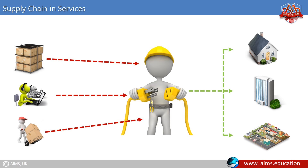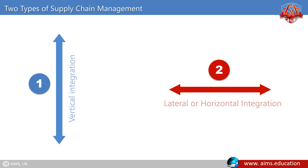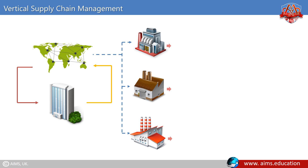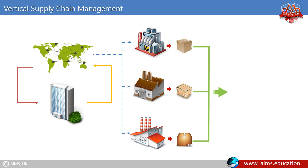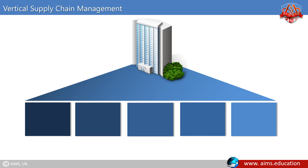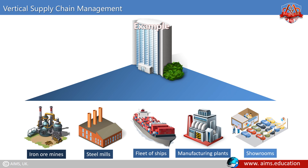Firms generally pursue one of two types of supply chain management: vertical integration and lateral or horizontal integration. Vertical supply chain management is an arrangement in which the supply chain of a company is owned by that company — usually each member produces a different product or market-specific service, and the products combine to satisfy a common need. For example, Ford owned iron ore mines, steel mills, a fleet of ships, manufacturing plants, and showrooms that built and distributed Ford cars.